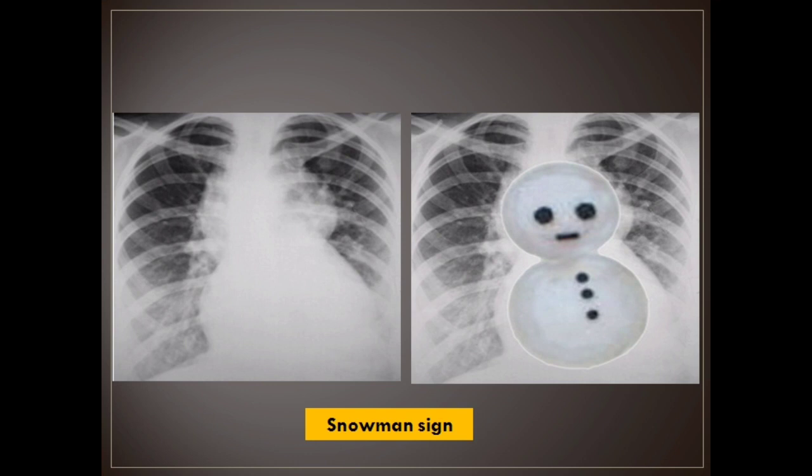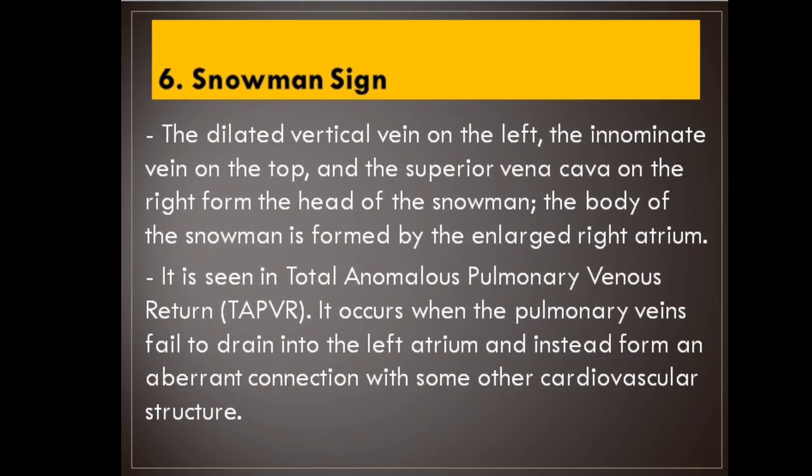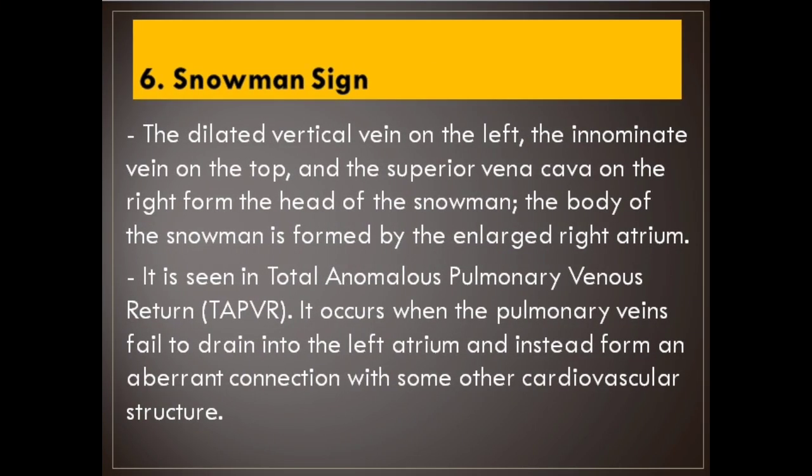Number 6: Snowman sign. The dilated vertical vein on the left, the innominate vein on the top, and the superior vena cava on the right form the head of the snowman; the body of the snowman is formed by the enlarged right atrium. Seen in total anomalous pulmonary venous return (TAPVR), which occurs when the pulmonary veins fail to drain into the left atrium and instead form an aberrant connection with some other cardiovascular structure.